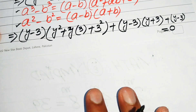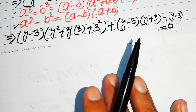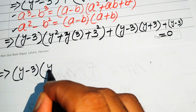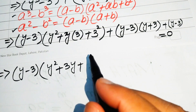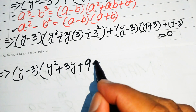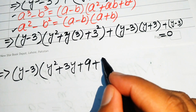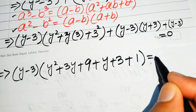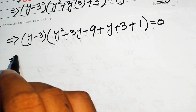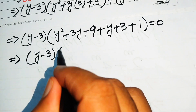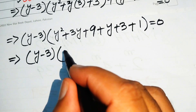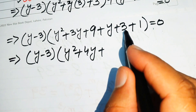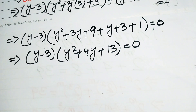We can see that (y minus 3) is a common factor in each term, so we factor it out: (y minus 3) times (y squared plus 3y plus 9 plus y plus 3 plus 1) equals 0. Simplifying the bracket: y squared plus 4y plus 13, so we have (y minus 3)(y squared plus 4y plus 13) equals 0.